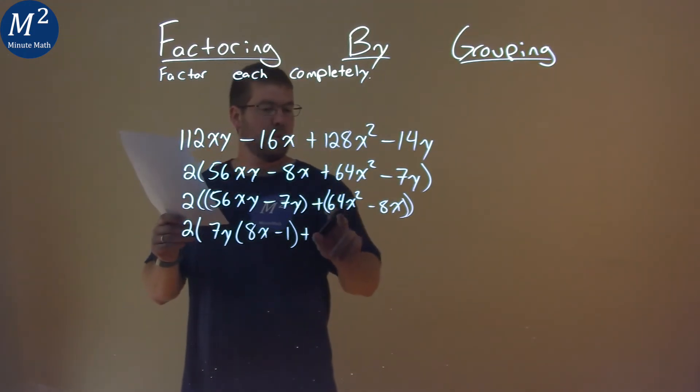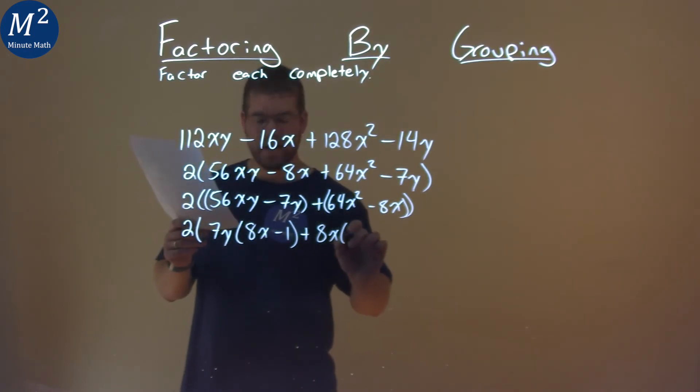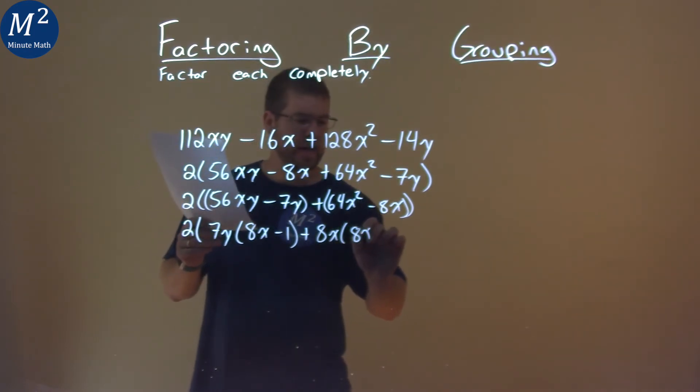Same thing in the second part. What's in 64x squared and 8x? That's an 8x. Pull out an 8x here, and I have 8x minus 1.